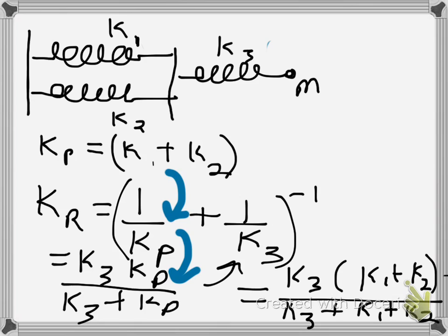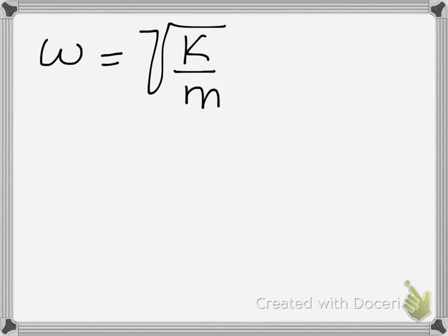Now for one last trick, which I'm going to flip the page for, so this all will go away, we can then calculate the frequency of oscillation. So omega, in general, is square root of k over m for spring constant and mass.